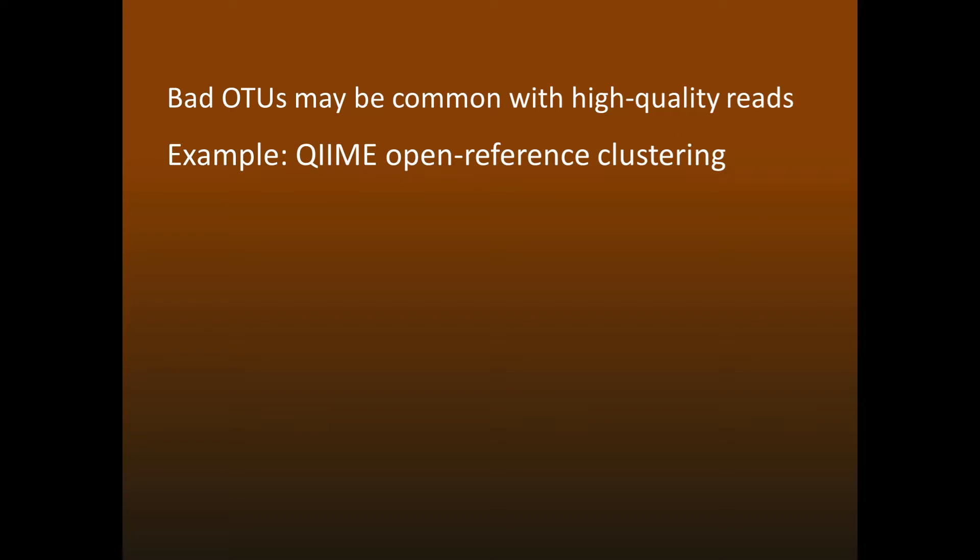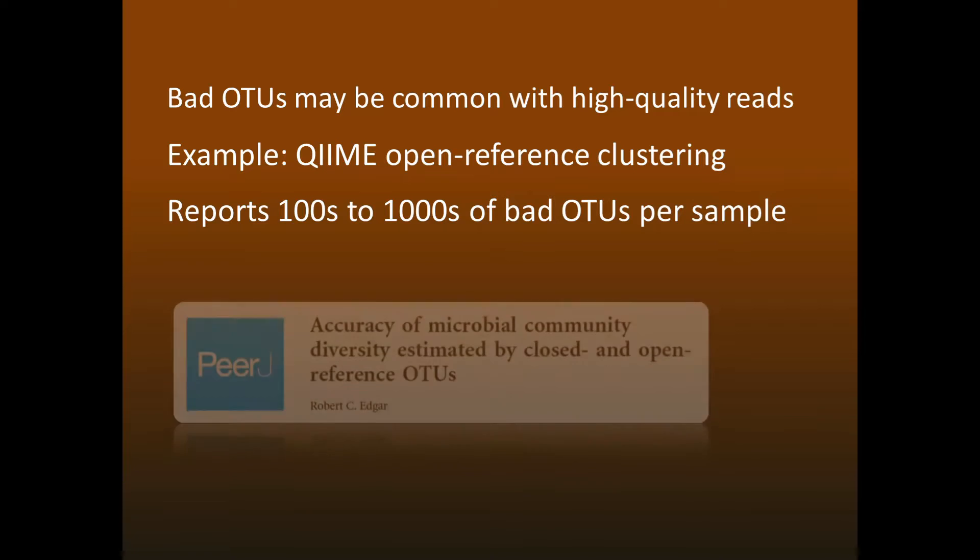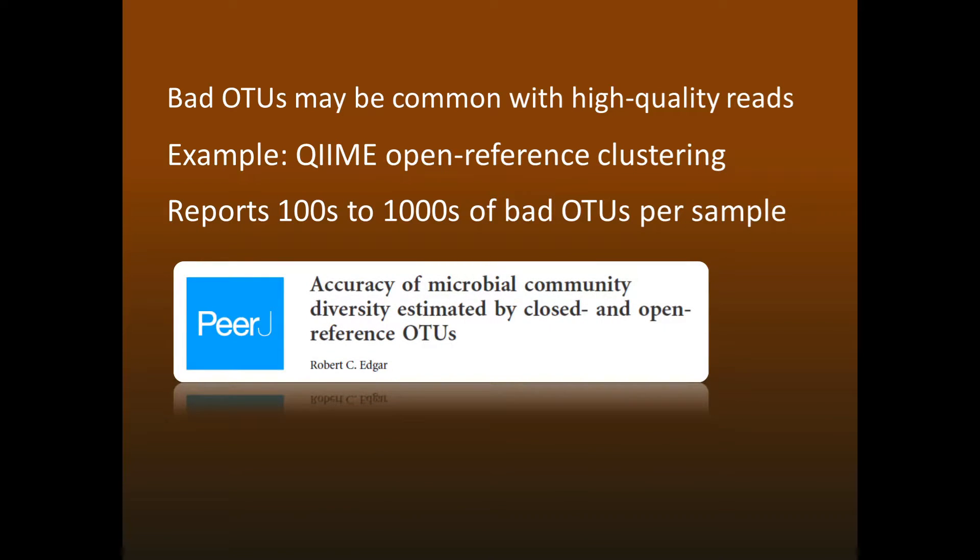Some well-known software packages have problems with this. For example, for several years the recommended OTU method in QIIME was called open reference clustering. This method generates hundreds or thousands of bad OTUs on mock community tests, and probably on real samples also. You can read more about this in my PeerJ paper shown here.